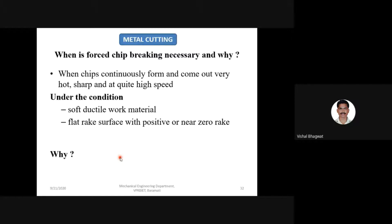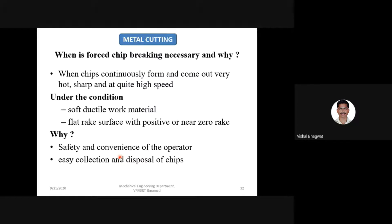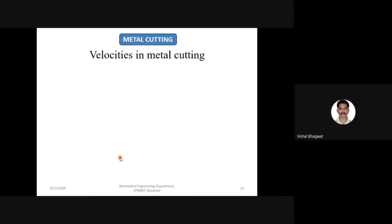Chip breakers are used when machining soft and ductile workpieces, and when you have flat rake angles with positive or near-zero degree inclination. Reasons: safety and convenience of the operator, since chips get wound around the tool and workpiece; and easy collection and disposal of chips — if wound, they are very difficult to break and remove from the workpiece.